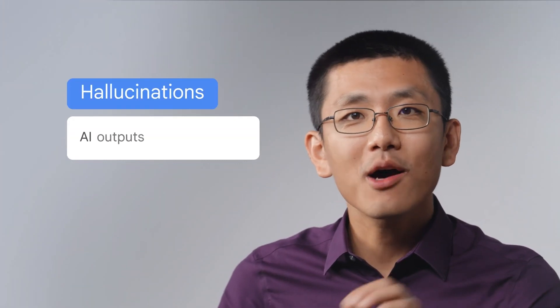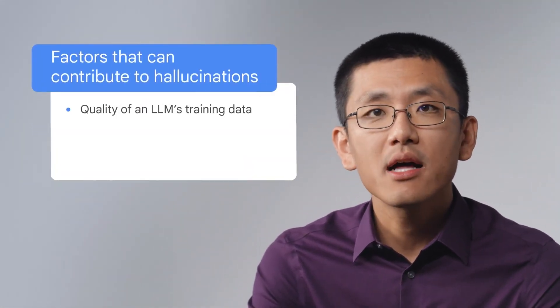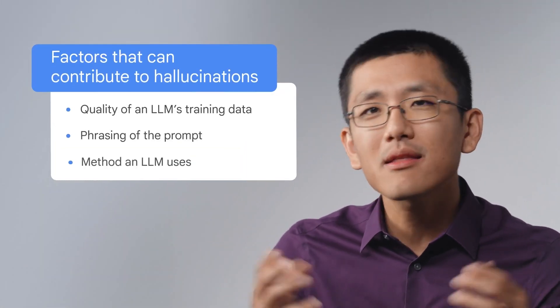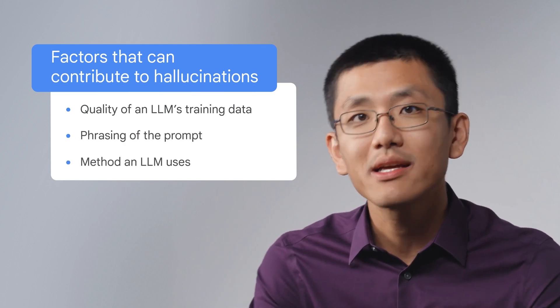Another factor that can affect output is the tendency of LLMs to hallucinate. Hallucinations are AI outputs that are not true. While LLMs are good at responding to many kinds of questions and instructions, they can sometimes generate text that is factually inaccurate. For example, if you use an LLM to summarize a company's history, it might hallucinate and provide incorrect information about details such as the date the company was founded or the current number of employees. Factors contributing to hallucinations include the quality of training data, the phrasing of the prompt, or the method an LLM uses to analyze text and predict the next word.